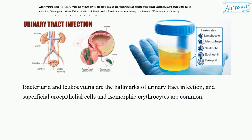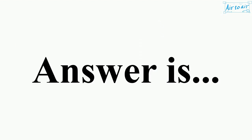Bacteriuria and leukocyturia are the hallmarks of urinary tract infection, and superficial uroepithelial cells and isomorphic erythrocytes are common. The answer is A.